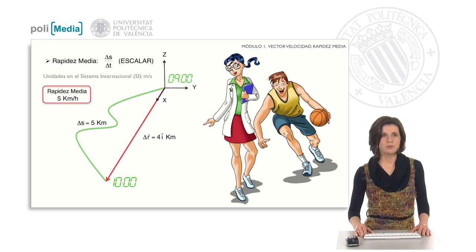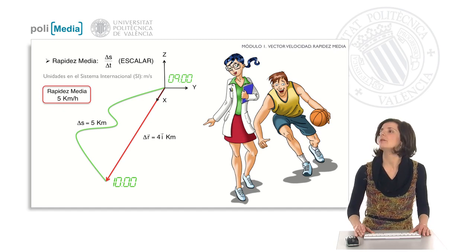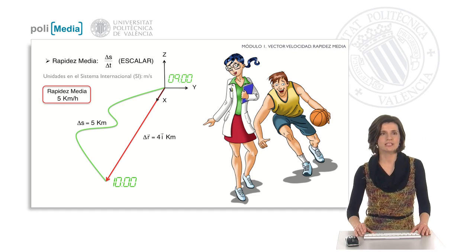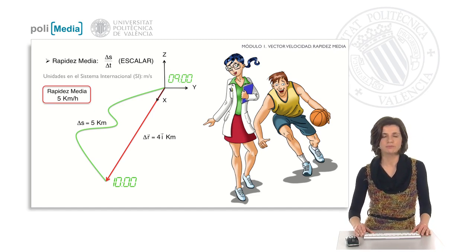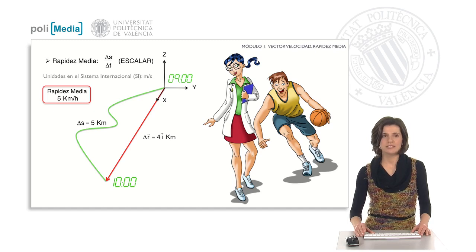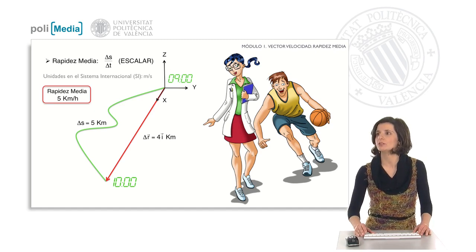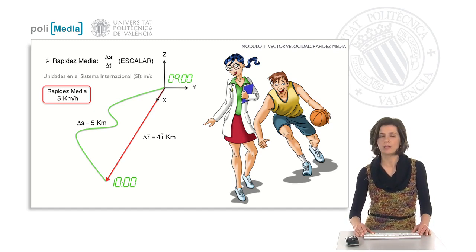It is very common to refer to velocity as the ratio between the space traveled on the trajectory — the increment of s divided by the time taken. However, in physics this quantity is called average speed. It is a scalar and is measured in meters per second. In this case the increase in s is 5 kilometers and the time taken is 1 hour, so the average speed is 5 kilometers per hour.